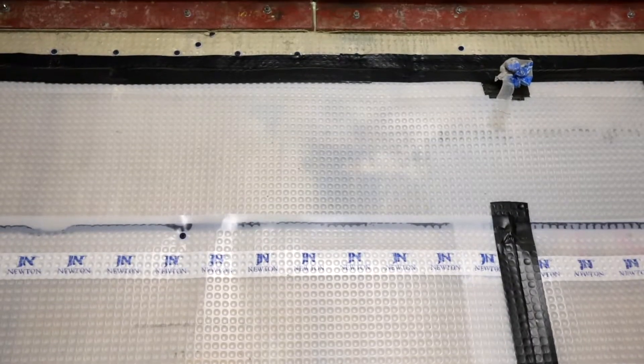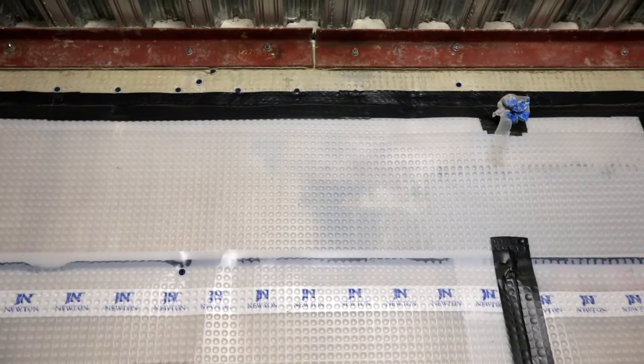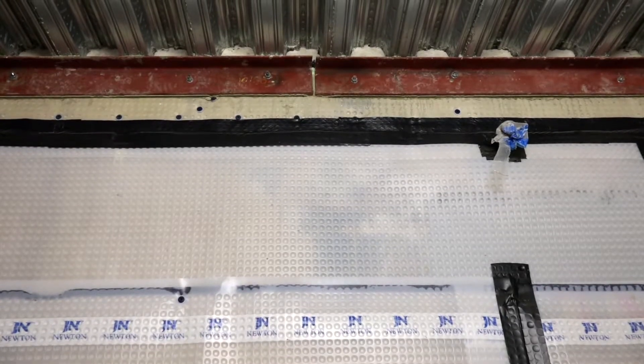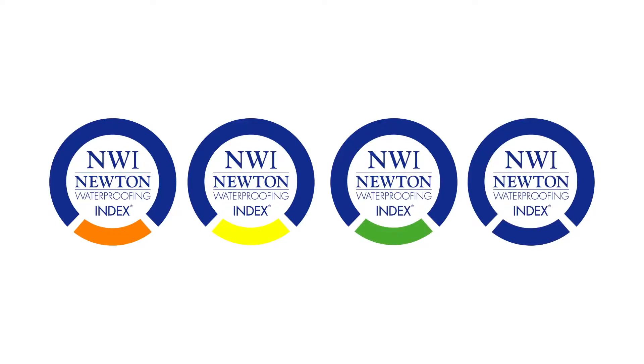So we design it to a full head of water pressure. Where the likelihood of leaking is high or the consequences of failure are unacceptable, we might use a dual system. There is obviously a cost versus risk decision attached to this.